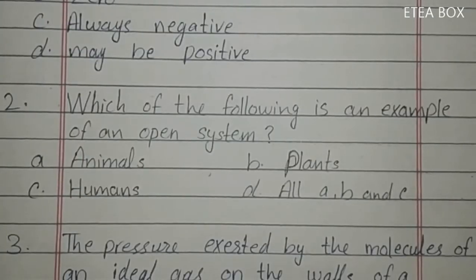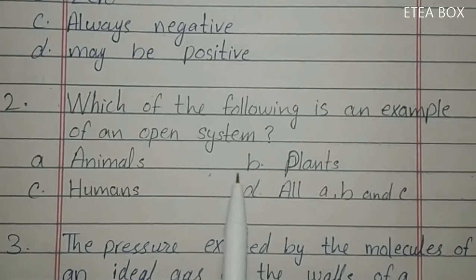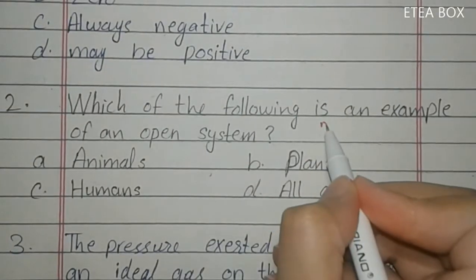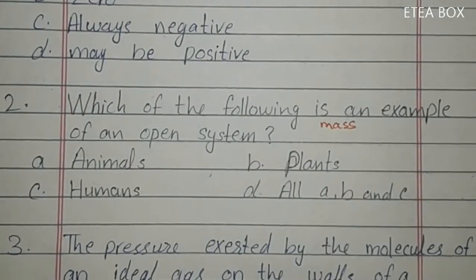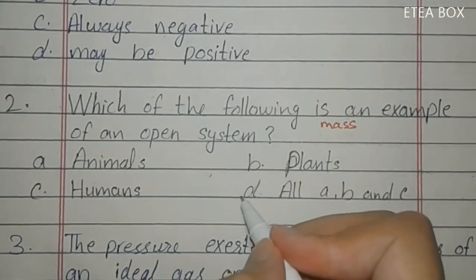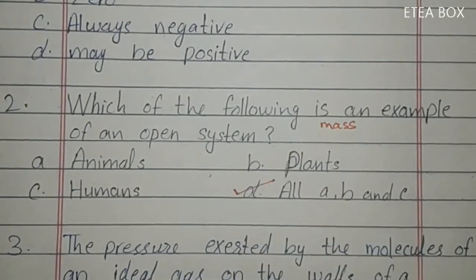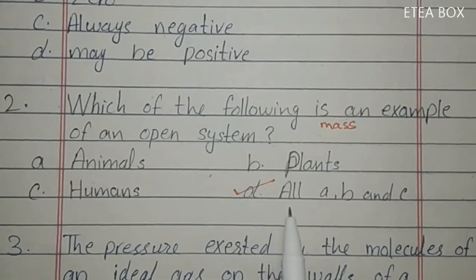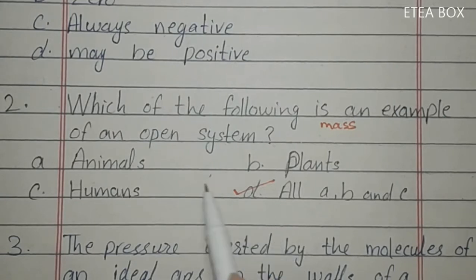Second MCQ: which one of the following is an example of an open system? An open system is one in which there is a transfer of mass across it. We know that animals, plants, and humans are open systems because they exchange material like oxygen, food, and waste products with the surroundings. So here option D is correct.